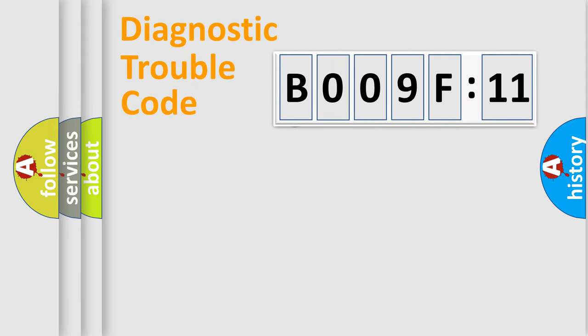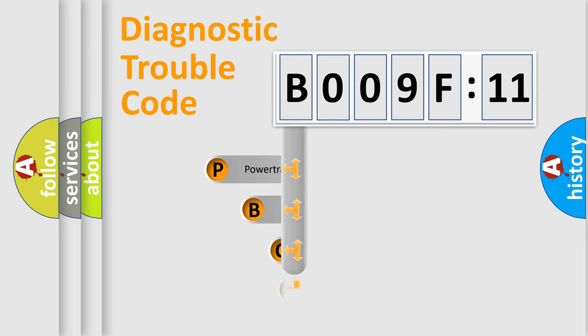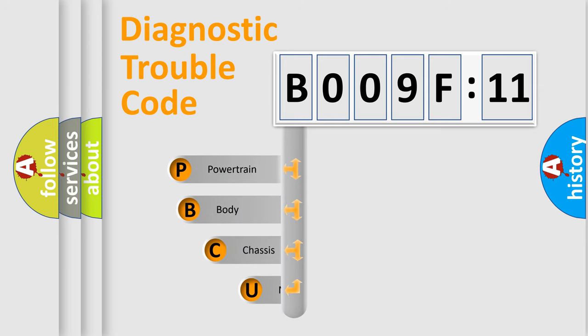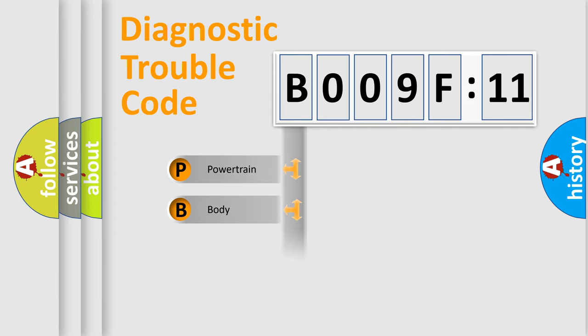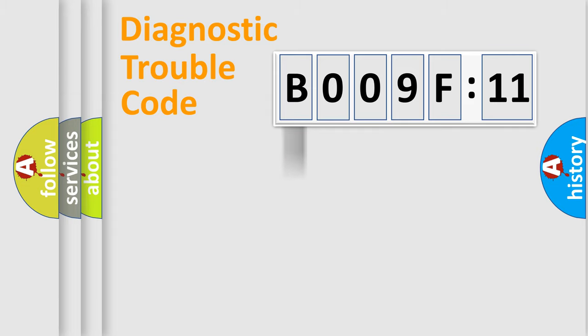First, let's look at the history of diagnostic fault code composition according to the OBD2 protocol, which is unified for all automakers since 2000. We divide the electrical system of an automobile into four basic units: Powertrain, Body, Chassis, and Network.